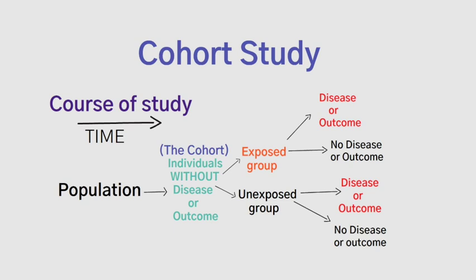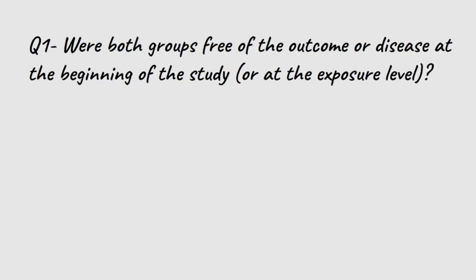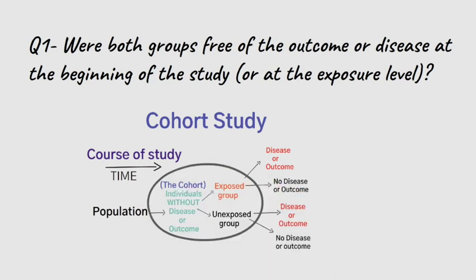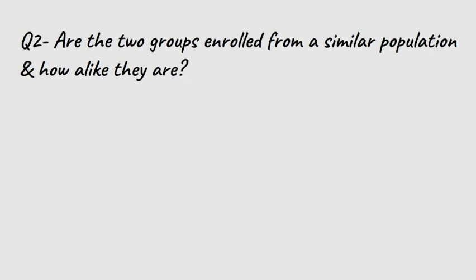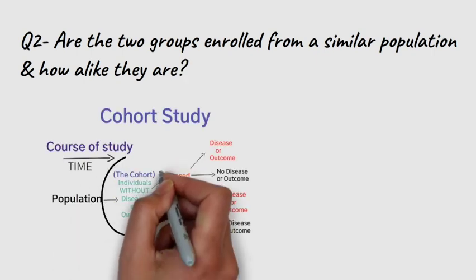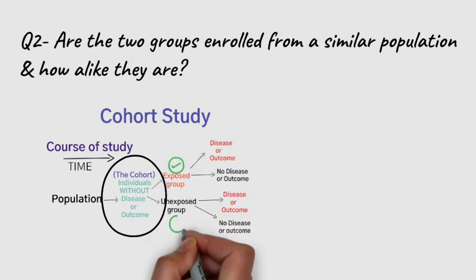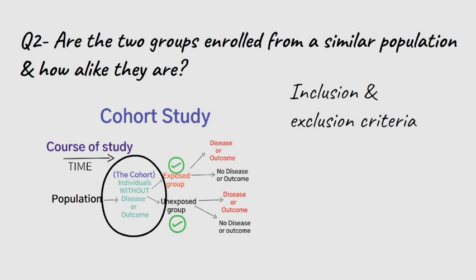This is the snapshot of a cohort study required before critically appraising it. The first question is to check if both groups or individuals are free of the disease or outcome at the start of the study or at the exposure level. You could explore the methods section to see details of sample enrollment, inclusion and exclusion criteria, and description of variables. The two groups should be enrolled from a similar population, and the selected cohort — both exposed and unexposed groups — should be as comparable as possible in all features apart from their exposure grade.